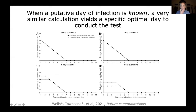When the day of infection is known — as in contact tracing — a similar calculation yields a specific optimal test date, which is approximately six days after infection regardless of quarantine duration. The difference from the unknown-infection case is that when you know someone is infected, you test when they are likely to come out positive; when you don't know if they're infected, you test as if they were infected at the last possible moment.